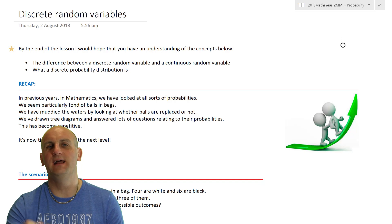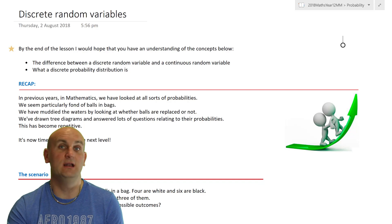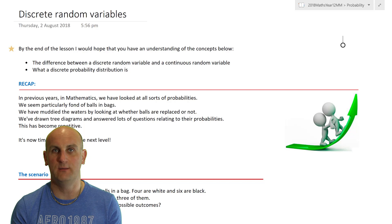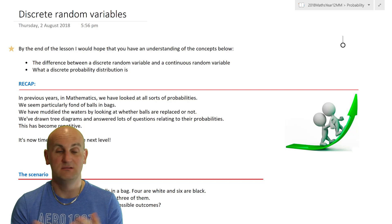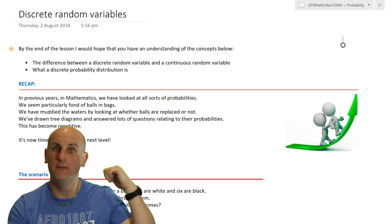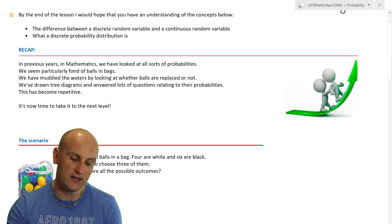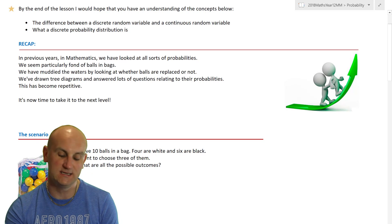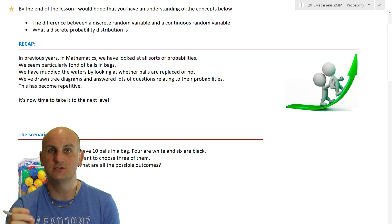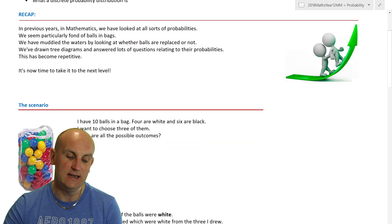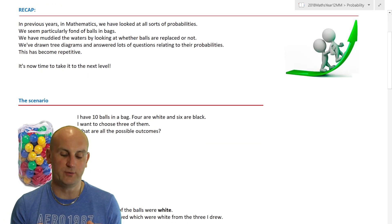So, random variables — what is a random variable? Well, as we said previously, it's where you cannot predict the outcome. A variable is just something that's going to possibly change. And discrete — well, let's not rush things. As you can see behind me, we're going to cover the difference between a discrete random variable and a continuous random variable, and what a discrete probability distribution is.